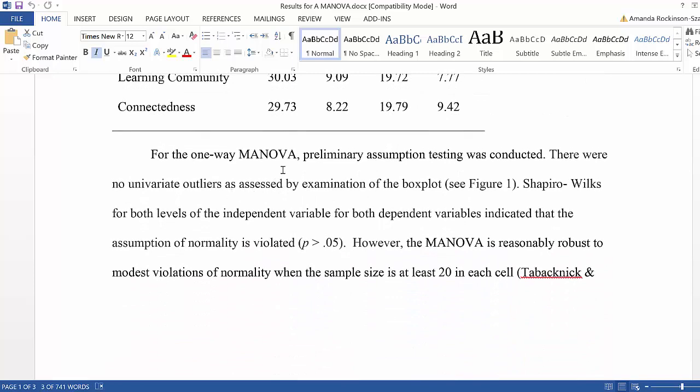Next it's customary to discuss the preliminary assumption testing that was conducted. Remember that to evaluate univariate outliers, we assess that using the box plot.